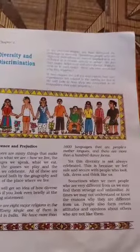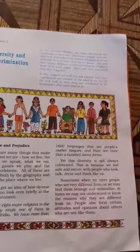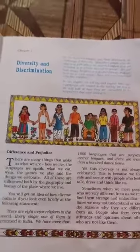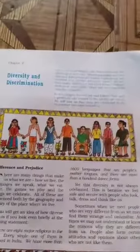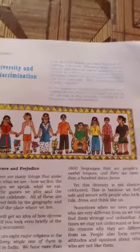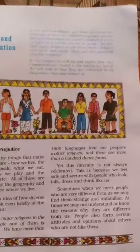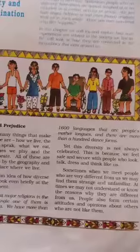We feel safe and secure with people who look like us, who talk like us, who dress like us, and who think like us. Sometimes when we meet people who are very different from us, we may find them strange and unfamiliar. People make certain attitudes and opinions about others who are not like them — they prejudice people who are not like them.